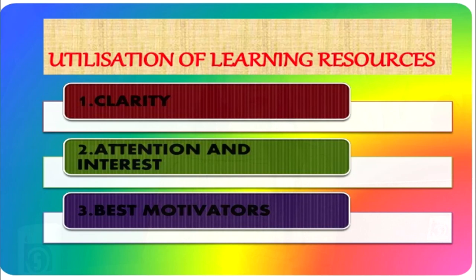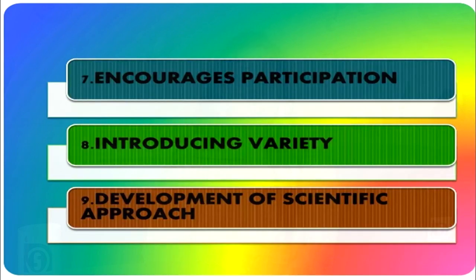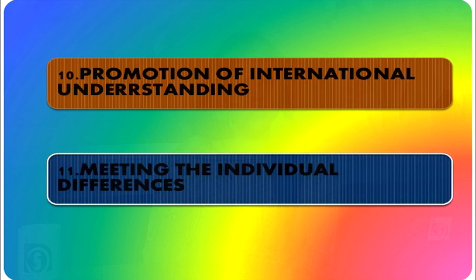Now we will talk about utilization of learning resources. These resources provide: clarity, attention and interest, and serve as the best motivators for students. Use of maximum senses — involving all the senses — makes learning effective and permanent. Other benefits include being based on maxims of teaching, saving time and effort, encouraging participation, introducing variety and development of a scientific approach, promotion of international understanding, and meeting individual differences.